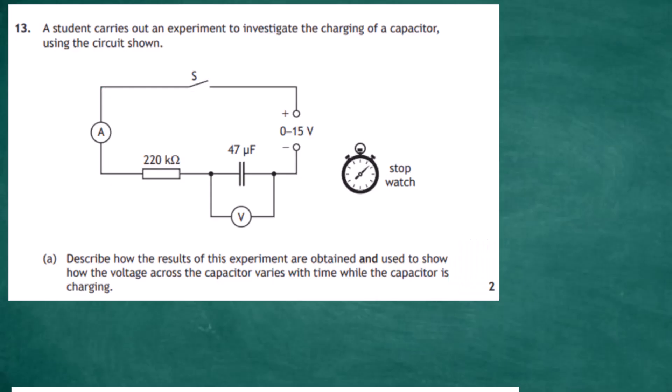Question 13 from section 2 of the 2022 Higher Physics examination from the SQA. A student carries out an experiment to investigate the charging of a capacitor using the circuit shown. The circuit has a switch S, an ammeter A, a 220 kilohm resistor in series with a 47 microfarad capacitor, a voltmeter across the capacitor terminals, a variable voltage supply of 0 to 15 volts, and a stopwatch.